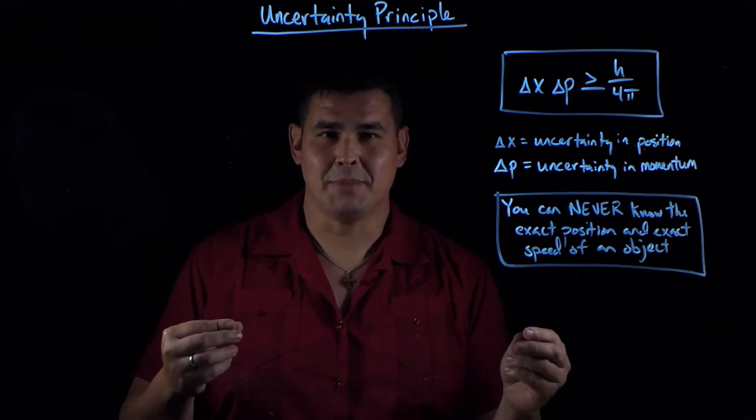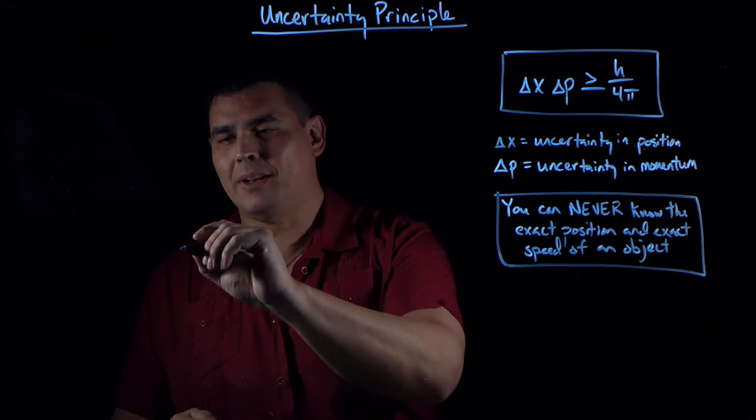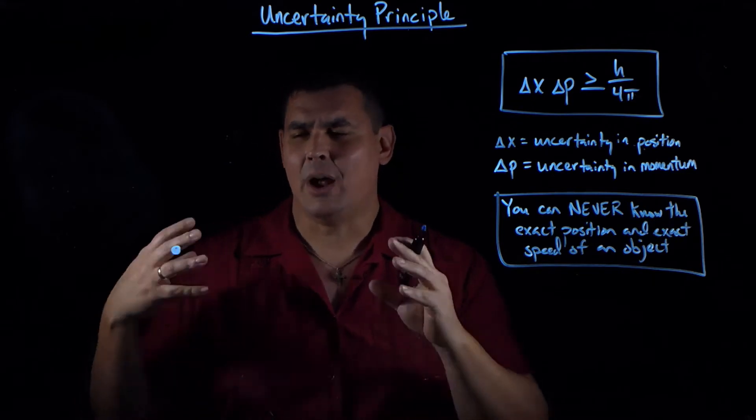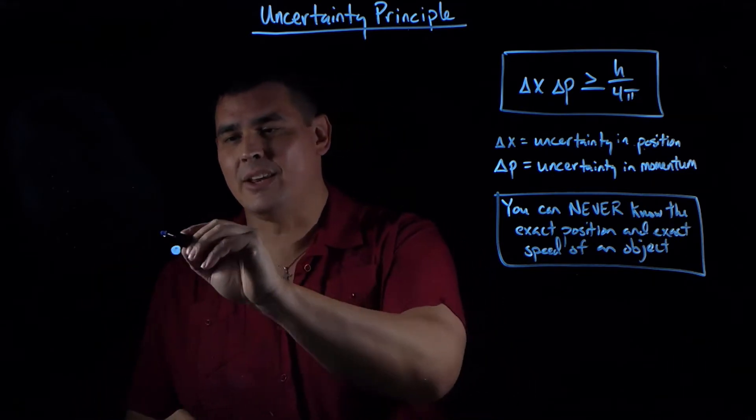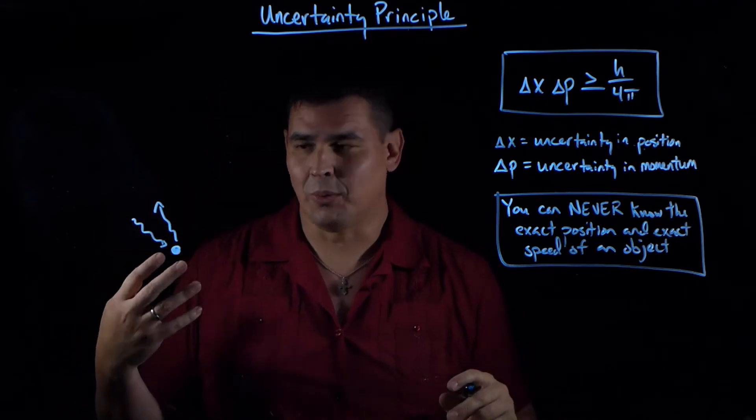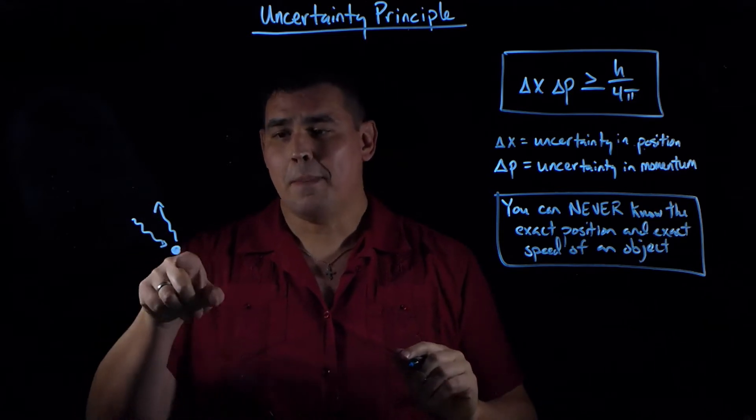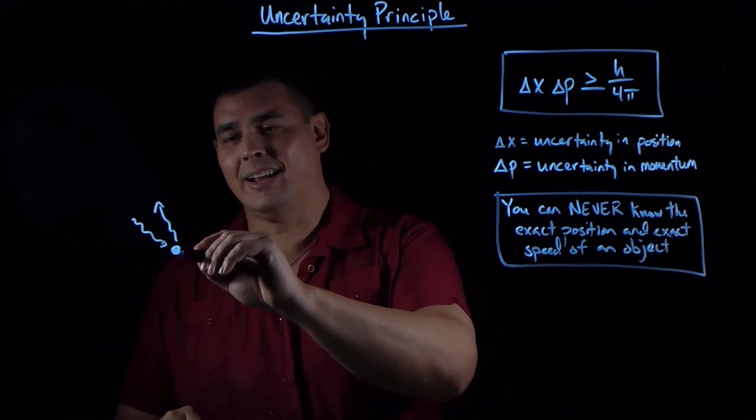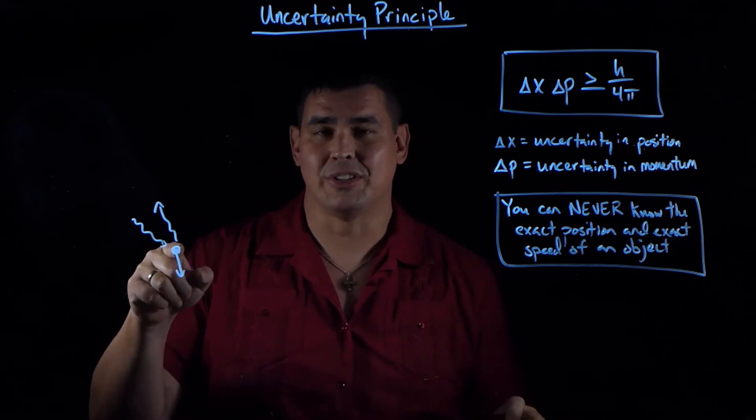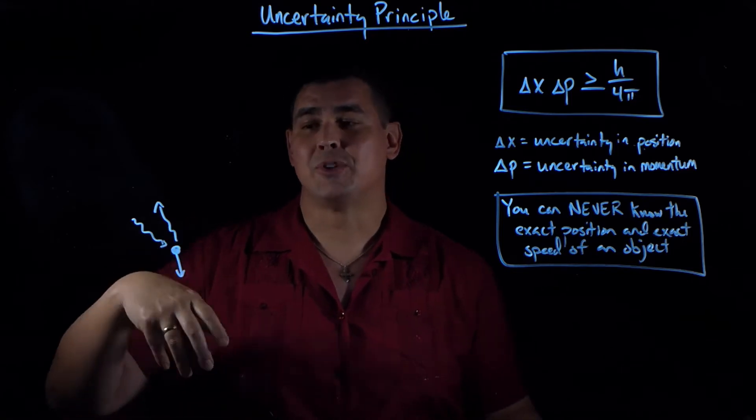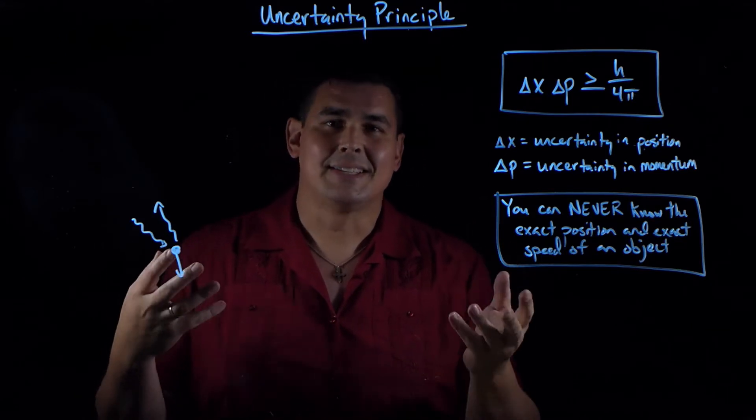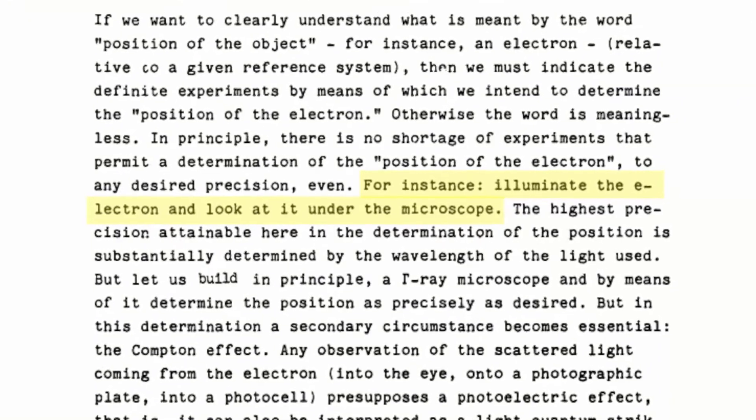The uncertainty principle involves measurement, but it's not just about measurement. The example a lot of people give is measuring the position of an electron. If you want to see where something's at, you need to take a photon and hit it and bounce it off. That photon needs to come back to your eye or instrument so you can tell where that electron was. But by shining a photon on that electron, it's not going to be there anymore. It's going to move off and the momentum and position has changed. You're measuring where it was. A lot of people say that's an example of the uncertainty principle.